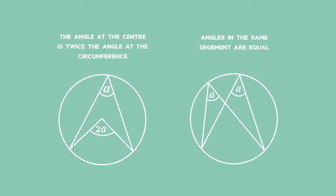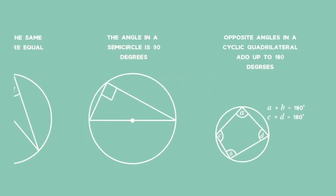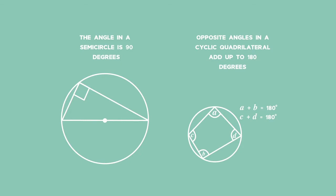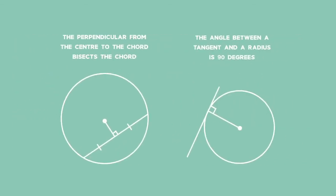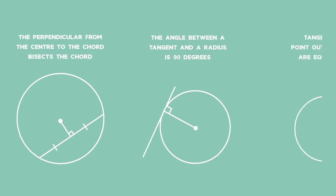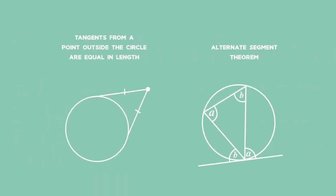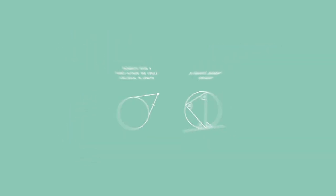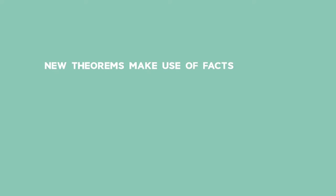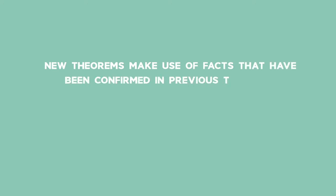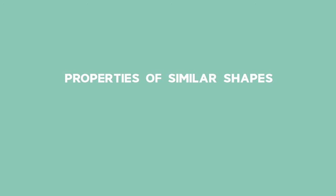Before we start working with similarity, you need to make sure that you understand and can work with the rules and theorems learnt in geometry so far. When you solve geometry problems, you need all the knowledge and theorems at your fingertips. Also, new theorems make use of facts that have been confirmed in previous theorems. Before we prove that triangles are similar, let's revise the properties of similar shapes.